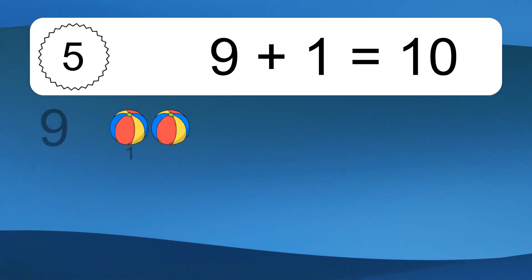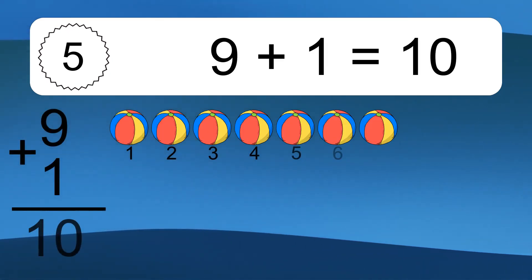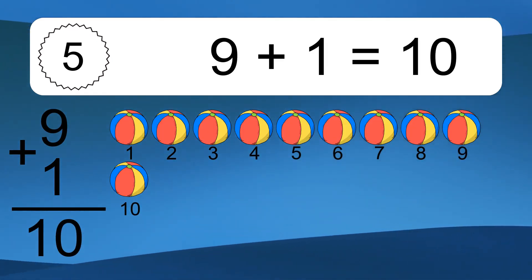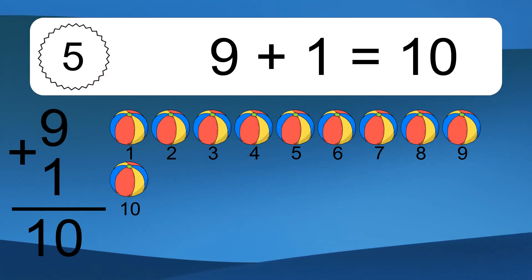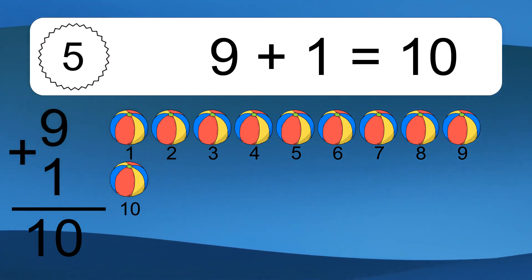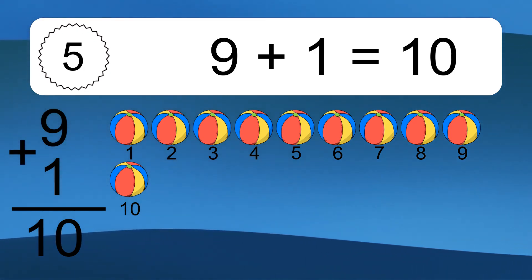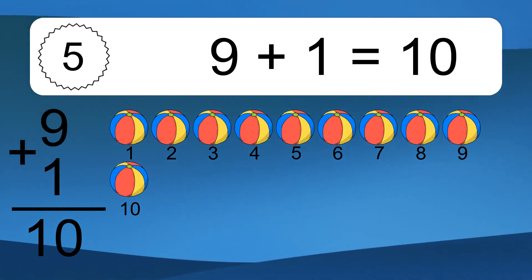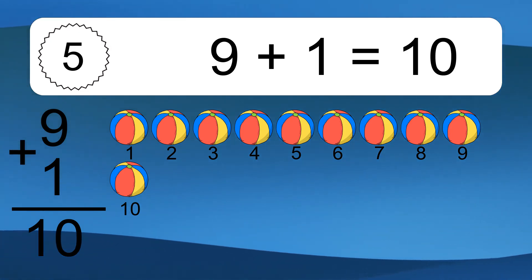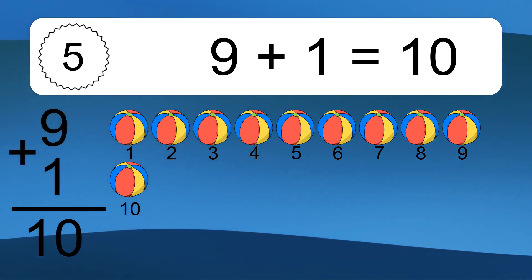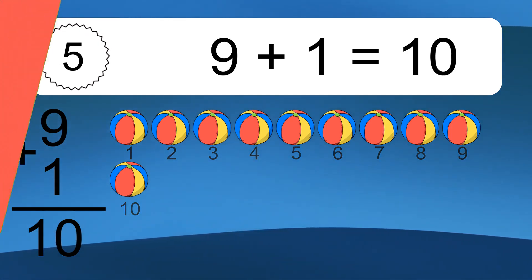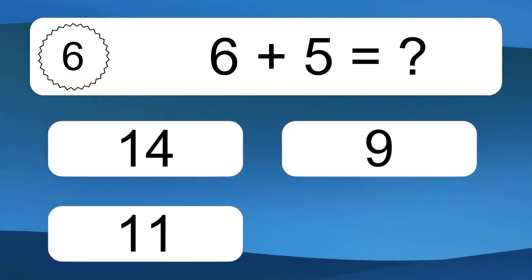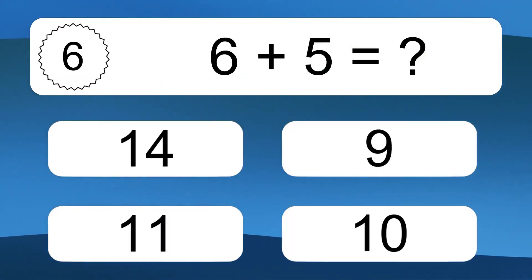Nine plus one equals what? Nine plus one equals ten. Let's count it: one, two, three, four, five, six, seven, eight, nine, ten.